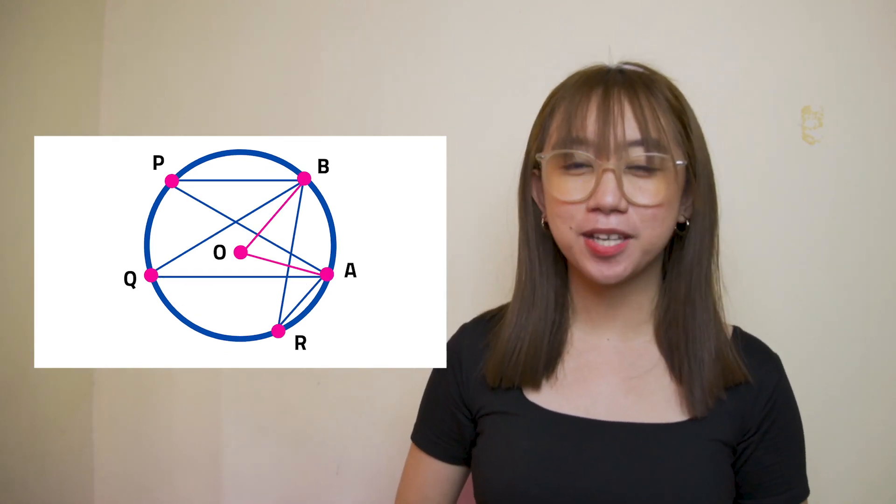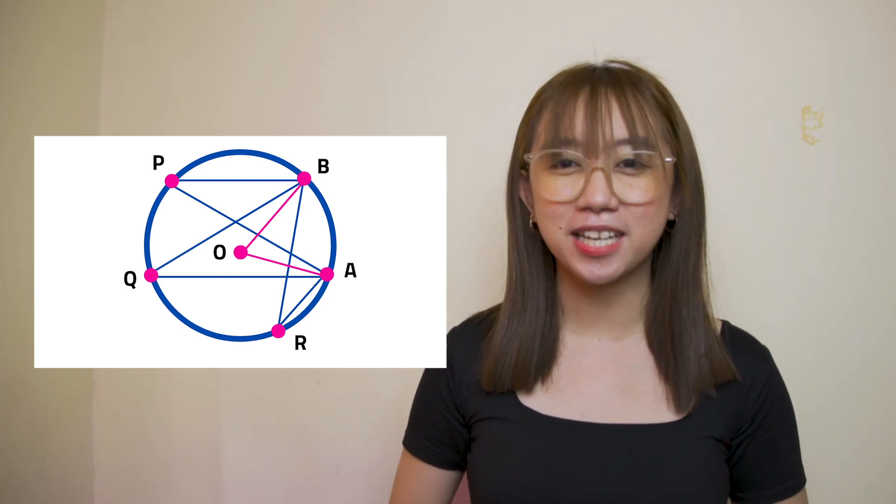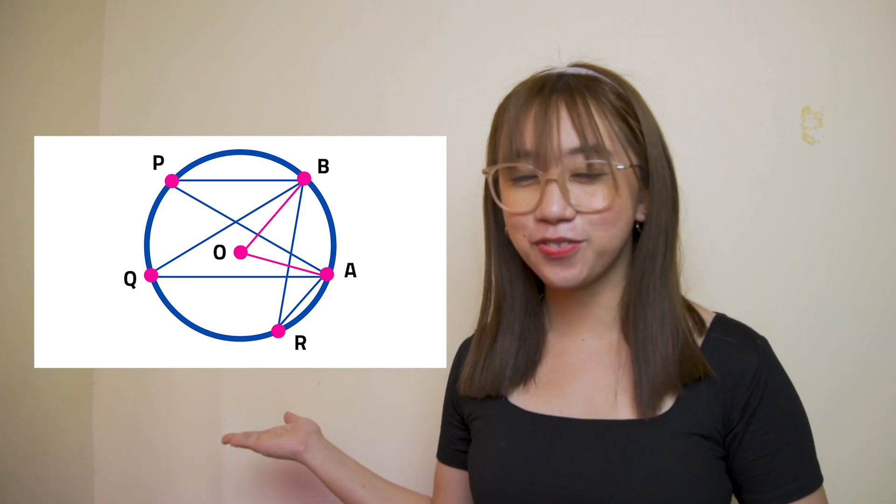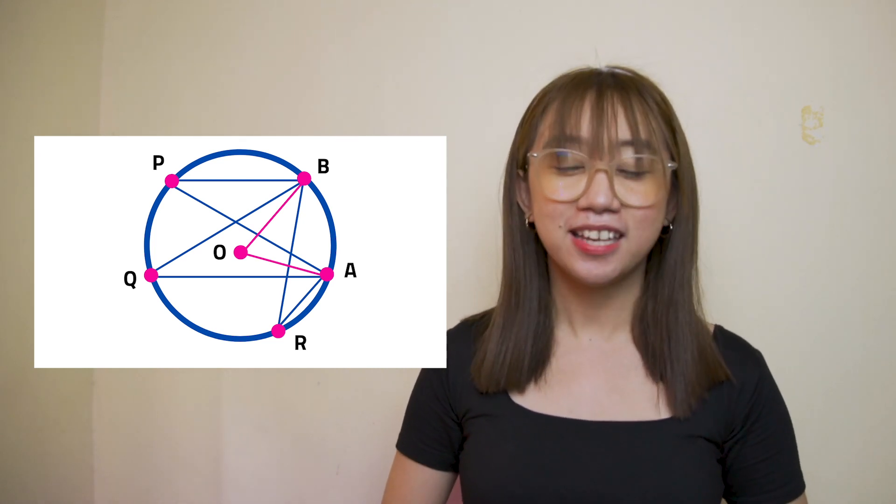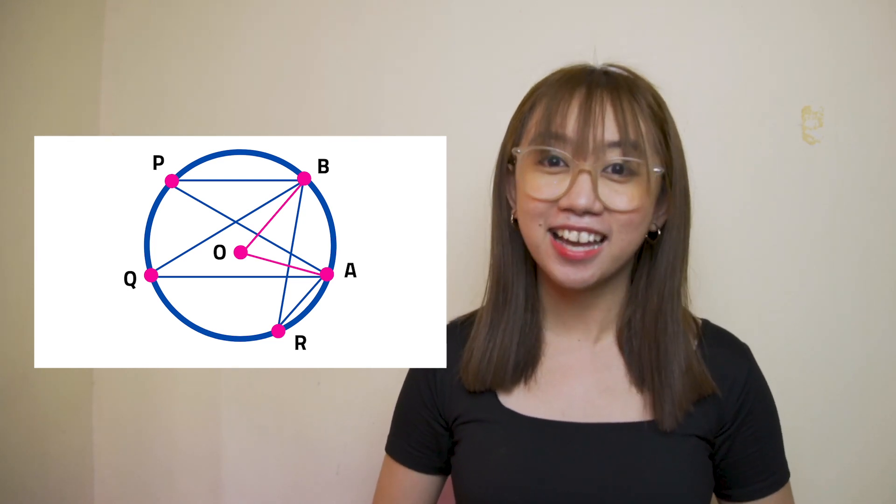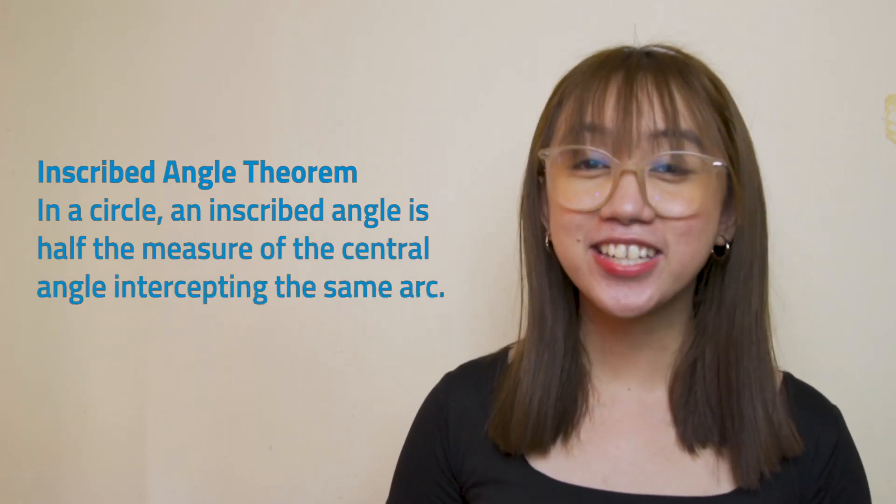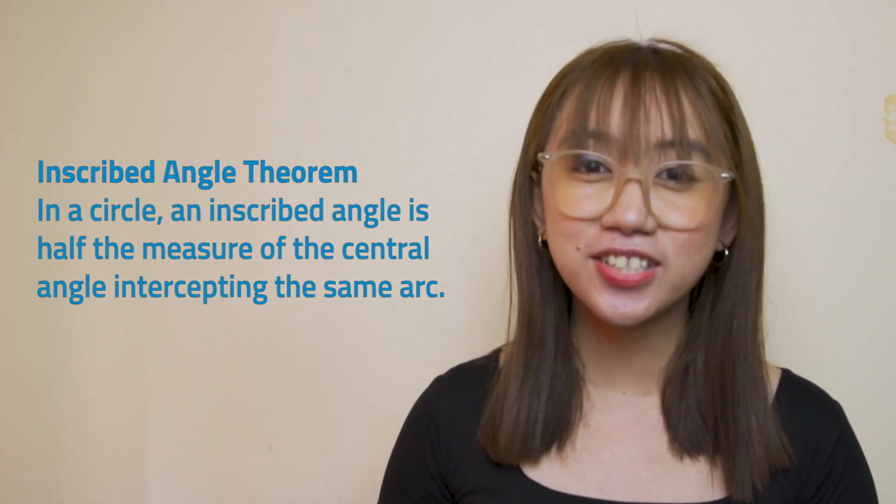An arc is intercepted by exactly one central angle but it may be intercepted by infinitely many inscribed angles. In this figure, arc AB is intercepted by the central angle, angle AOB, and by the inscribed angles, angle APB, angle AQB, and angle ARB. To prove that all inscribed angles that intercept the same arc are congruent, let's talk about the inscribed angle theorem. The inscribed angle theorem states that, in a circle, an inscribed angle is half the measure of the central angle intercepting the same arc.